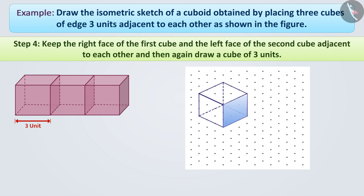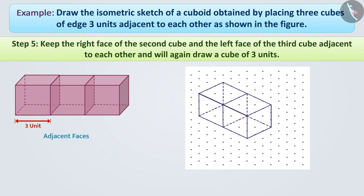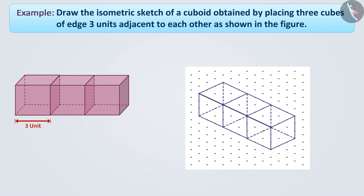Step 4: Now, we will keep the right face of the first cube and the left face of the second cube in common and then we will again draw a cube of 3 units. Step 5: Similarly, we will keep the right face of the second cube and the left face of the third cube in common and we will again draw a cube of 3 units. In this way, we have created an isometric sketch of the cuboid.